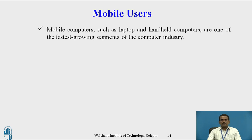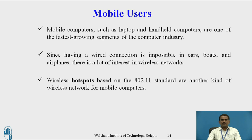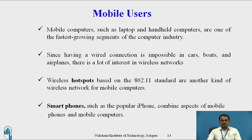Mobile Users: Mobile computers such as laptops and handheld computers are one of the fastest growing segments of the computer industry. Since having a wired connection is impossible in cars, boats, and airplanes, there is a lot of interest in wireless networks. If they are using a wired connection, it is not possible to access data in cars, boats, or airlines. If they are using the wireless concept, they can access data anywhere. Wireless hotspots based on the 802.11 standard are another kind of wireless network for mobile computers. Smartphones such as the popular iPhone combine aspects of mobile phones and mobile computers.